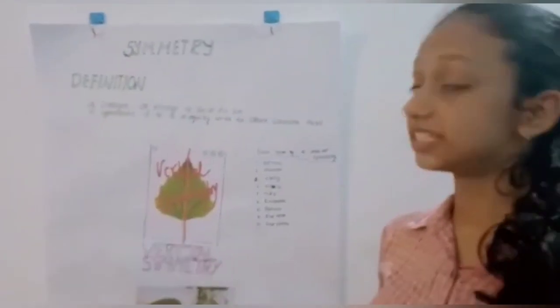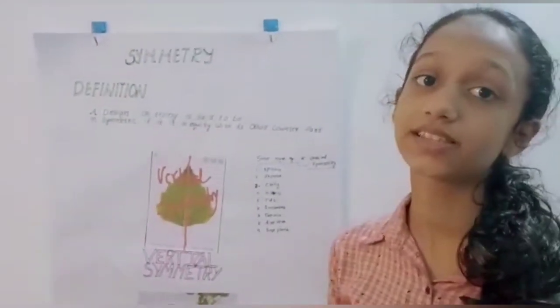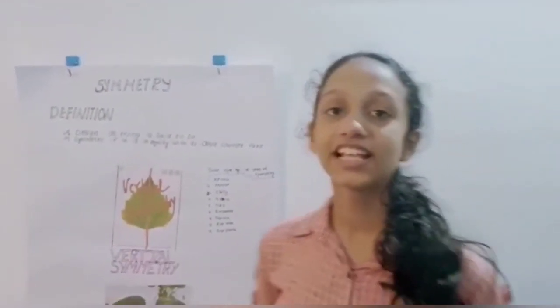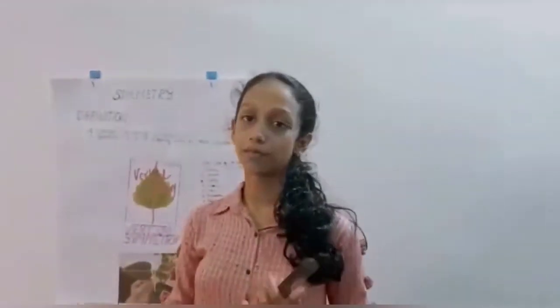Here I am showing some examples for vertical symmetry. There are spinach, jasmine, chili, hibiscus, etc. We already discussed all these things in our project.